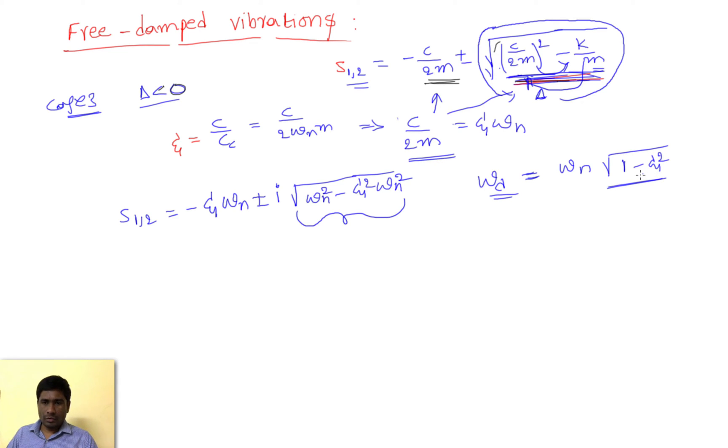The frequency of the system is omega n times the square root of one minus xi squared. If the damping in the system is zero, then automatically xi becomes zero, and omega d equals omega n. But since we have damping in the system, omega d is no longer equal to omega n.